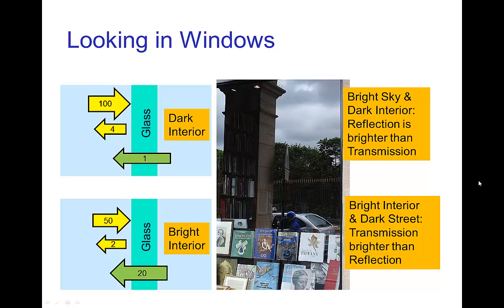When you look into a window, as in this photo, on the top part we see a strong reflection of the sky and we don't see inside the shop. Even though only about four percent of the light from outside is reflected, because the interior is so dark, the reflection overwhelms the transmitted light from the inside. On the lower part of the window, the interior of the bookstore is bright, so much more light comes from the interior and overwhelms the reflection — we don't see much reflection because we see so much more transmitted light.